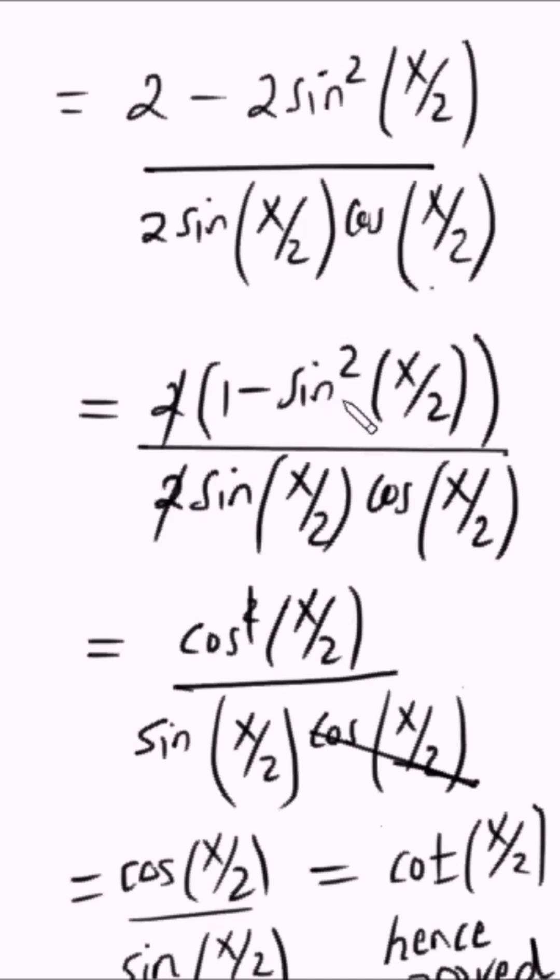And 1 minus sin squared is just cos squared. So I remain with cos squared of x over 2 over sin of x over 2 times cos of x over 2.